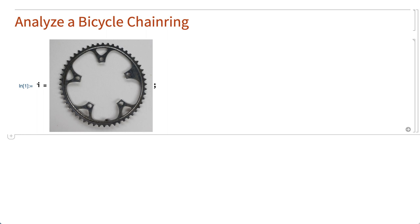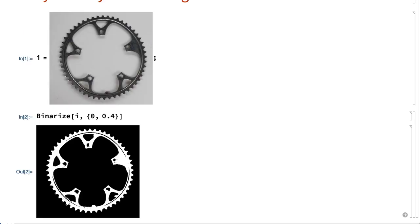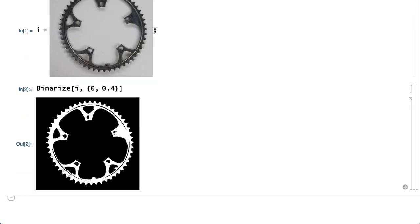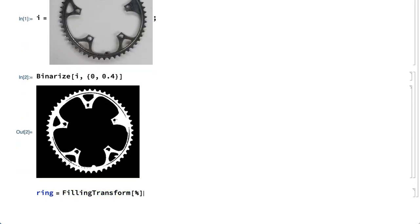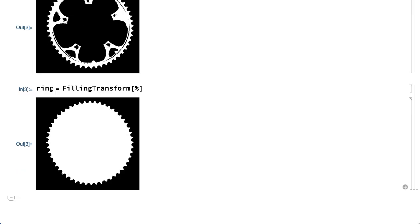Since that task depends only on the outer edge of the ring, it is reasonable to begin by using the binarize function to do segmentation by thresholding to separate the ring from the background, and then use the filling transform function to fill in all of the holes within that segment to get a simpler image that still has the same outer edge.